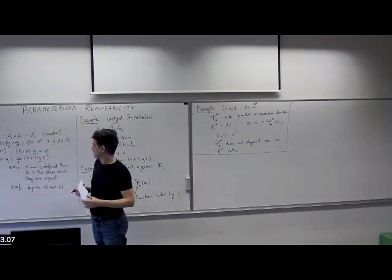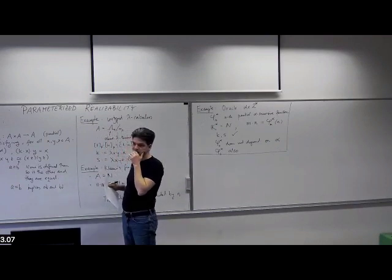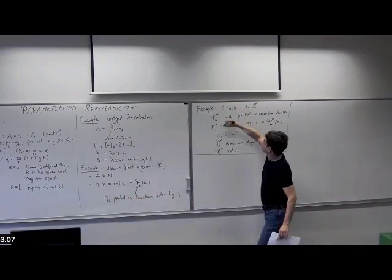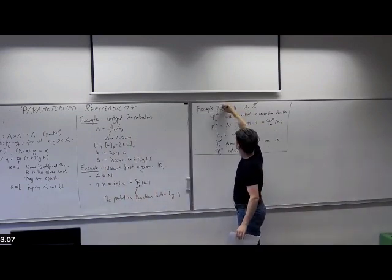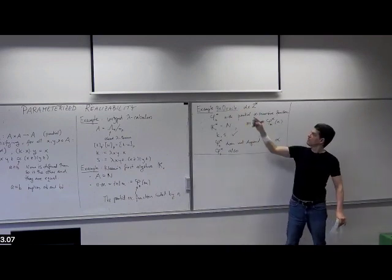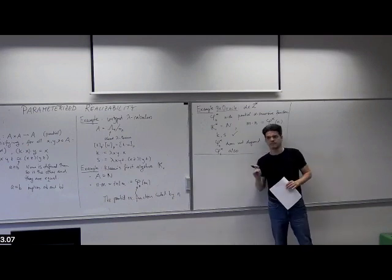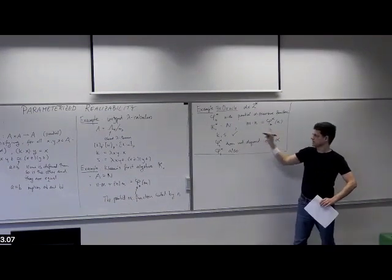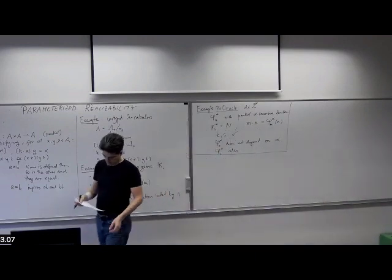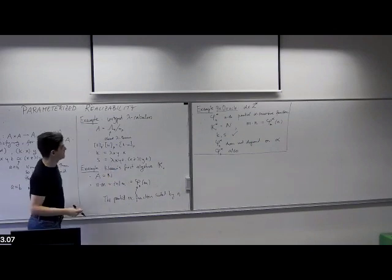When you apply the application multiple times, you do it for a fixed oracle. In parameterized realisability, we'll have a whole set of oracles and in principle you could mix them. But right now, it's always the same oracle α. So those are ordinary PCAs. Now let's look at what parameterized PCAs are.